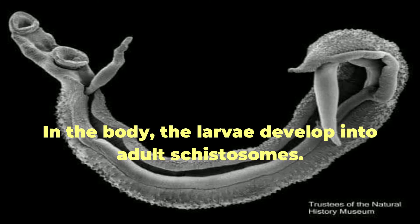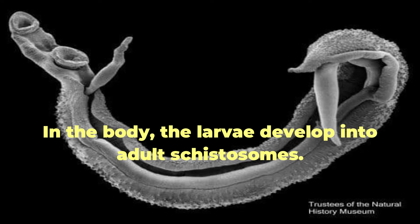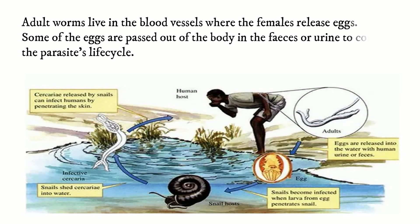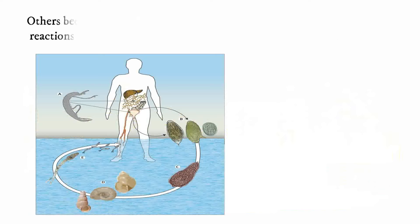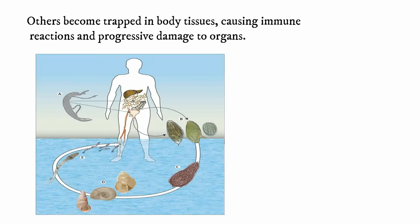In the body, the larvae then develop into adult schistosomes. Adult worms live in the blood vessels where the females release eggs, and some of the eggs are passed out of the body in the feces or urine to continue the parasite's life cycle. Others become trapped in body tissues, causing immune reactions and progressive damage to organs.